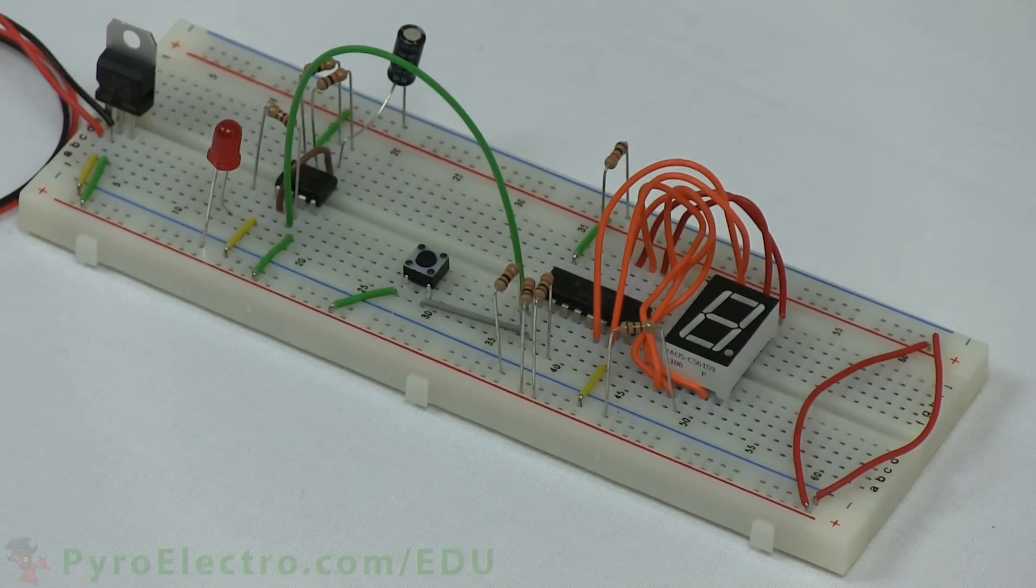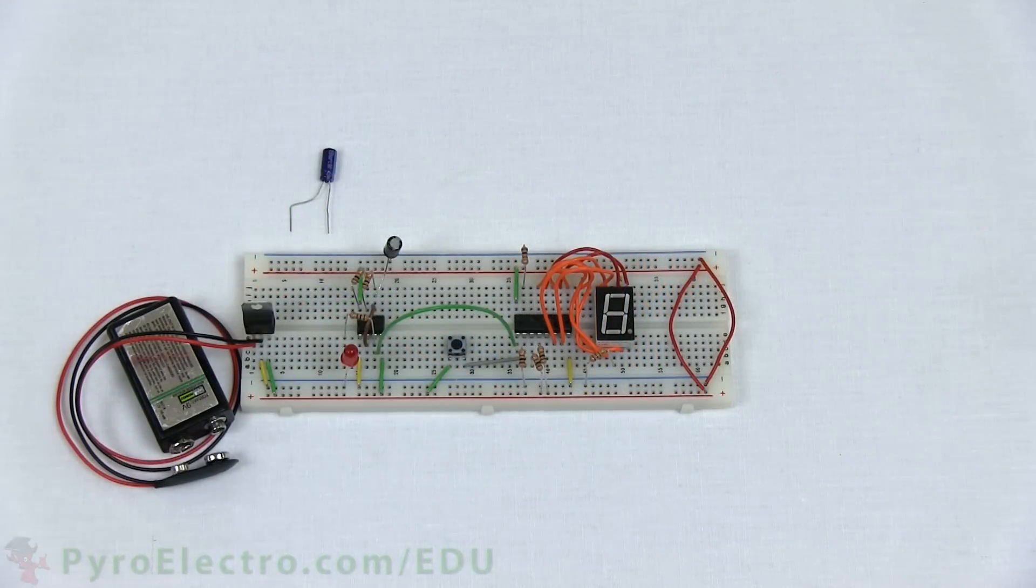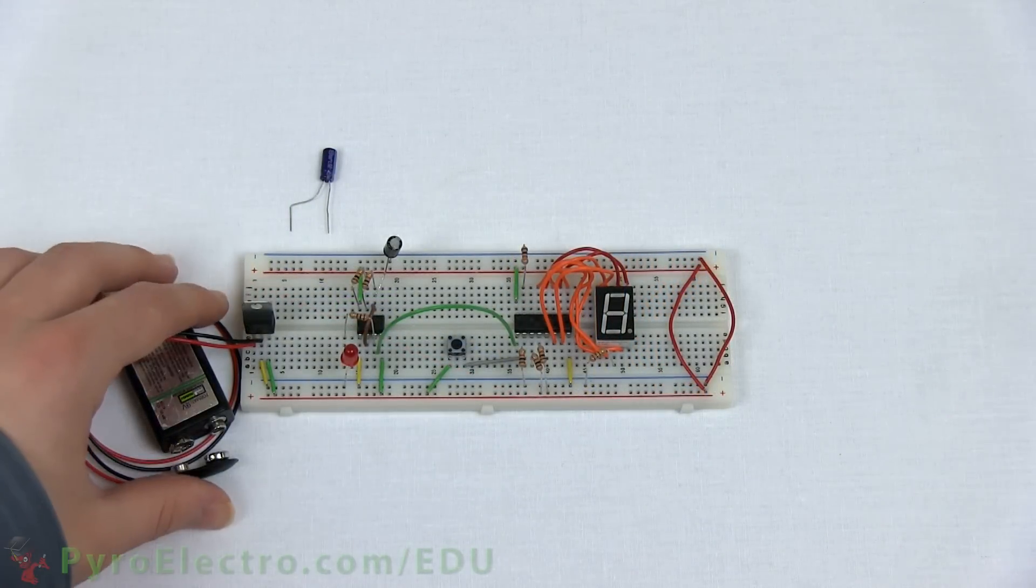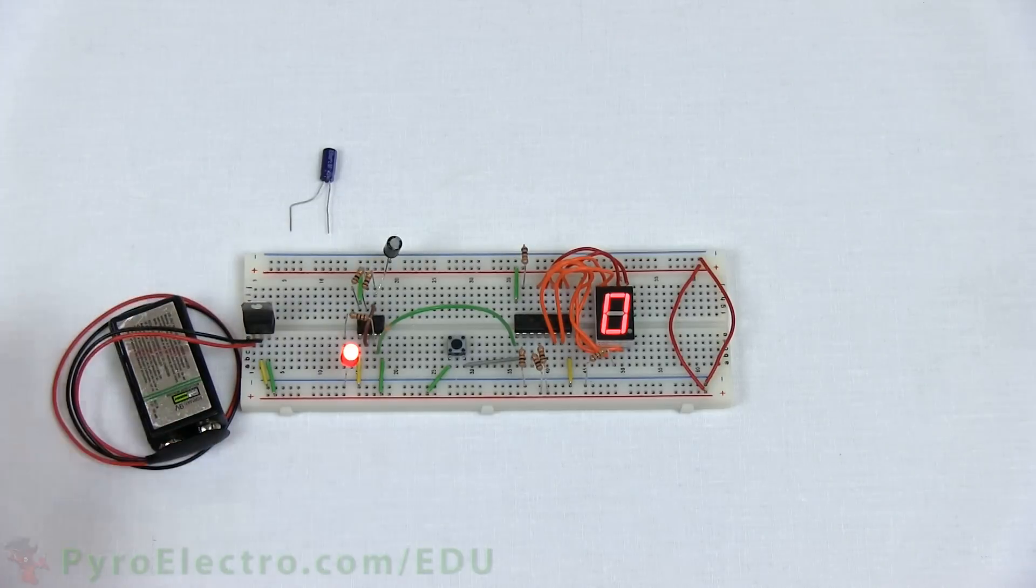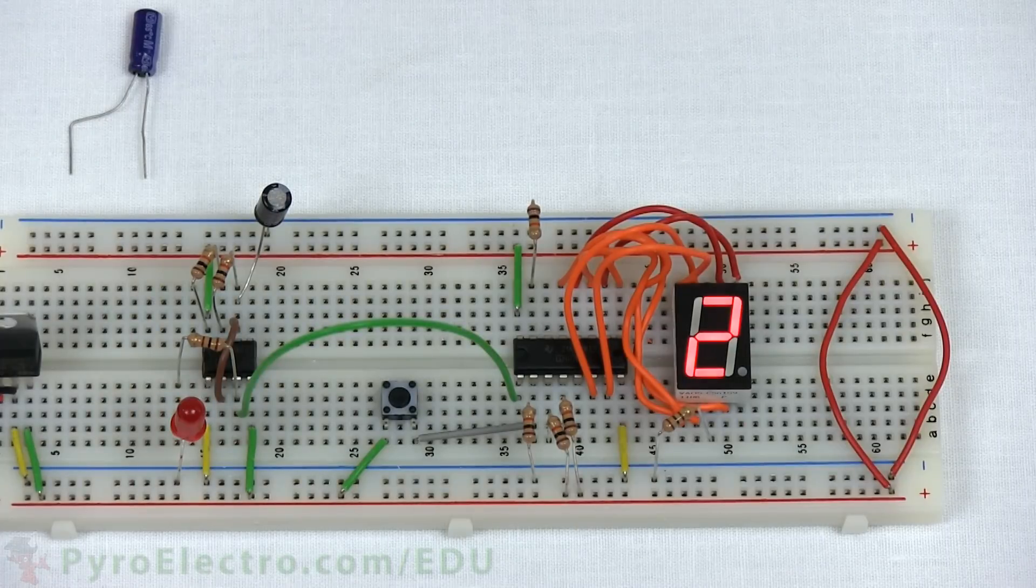With the circuit complete, let's turn power on and see how it works. You can watch the counter slowly count up on the LED display, and it's much easier to read since it is in decimal and not binary with 4 LEDs.